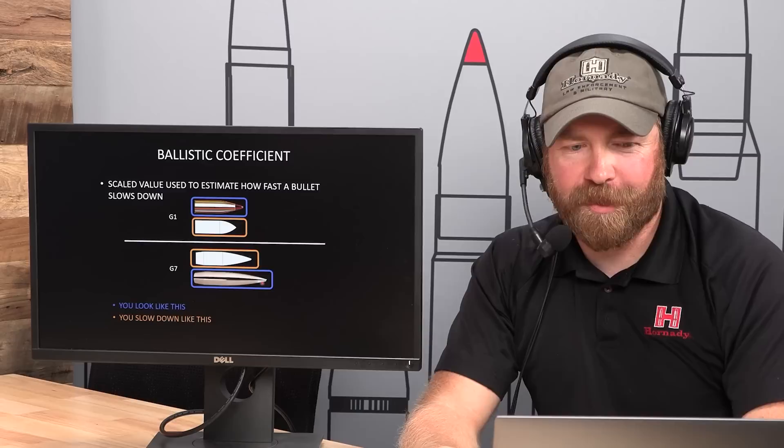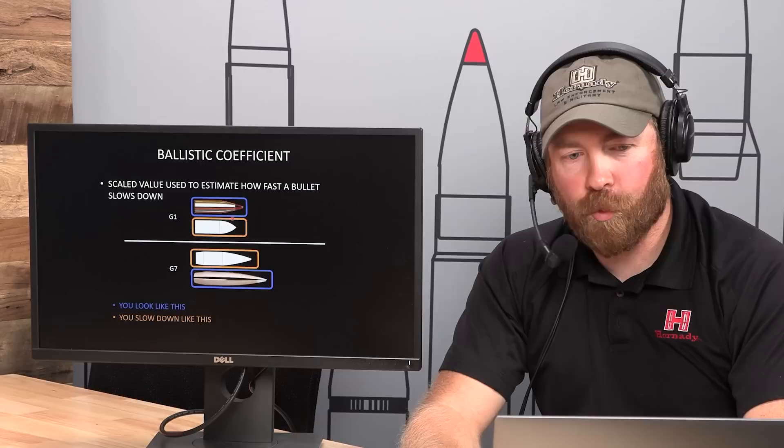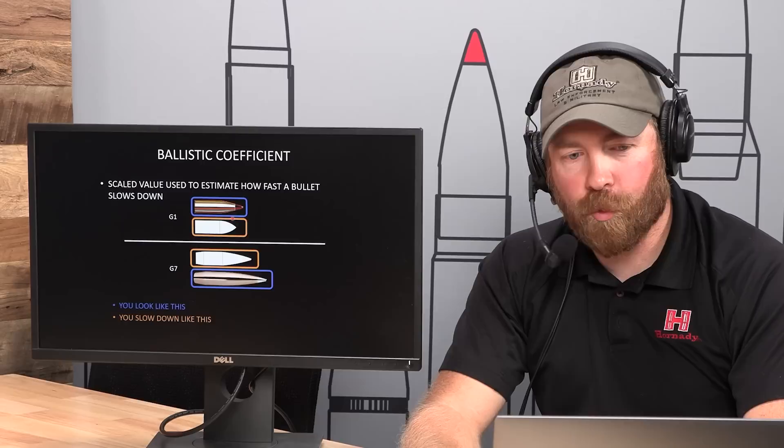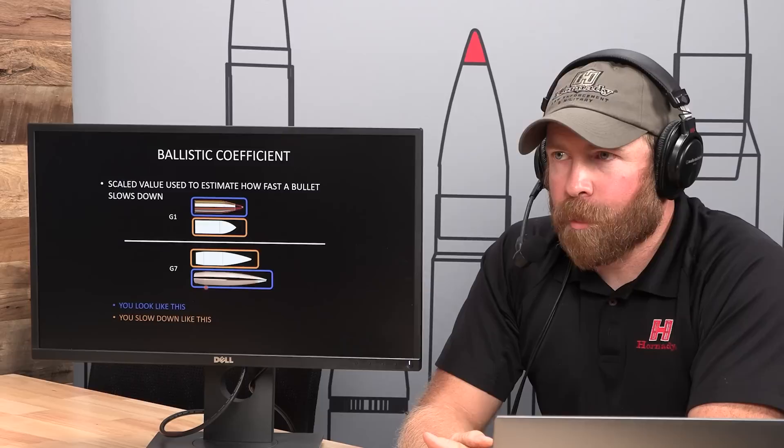I'd argue that the longer ogive of the 55-grain VMAX makes it slow down at a less rapid rate than the G1 because it's more aerodynamic — more like a sports car than the G1. Same with the .250 A-Tip: its ogive goes for miles compared to the G7 standard bullet, and its boat tail is quite a bit longer. It's way more race-car-like than the G7 standard, so it's not going to slow down the same way.